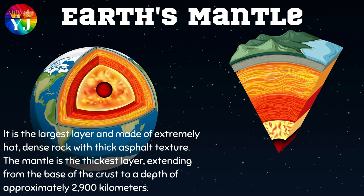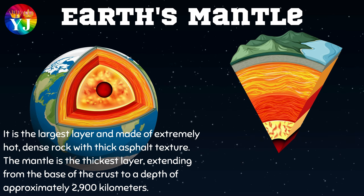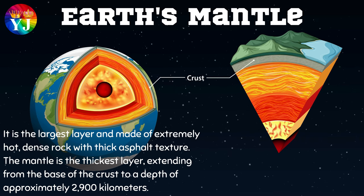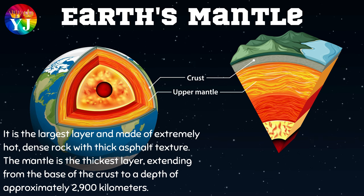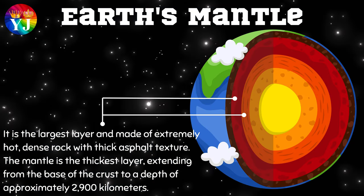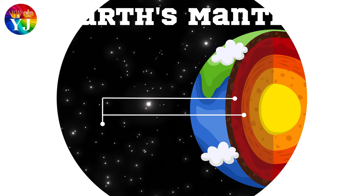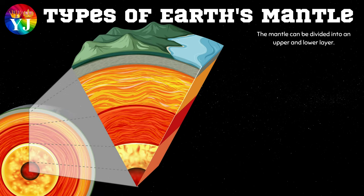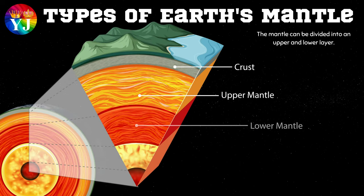Earth's mantle is the largest layer and made of extremely hot, dense rock with thick asphalt texture. The mantle is the thickest layer, extending from the base of the crust to a depth of approximately 2900 km. The mantle can be divided into an upper and lower layer.